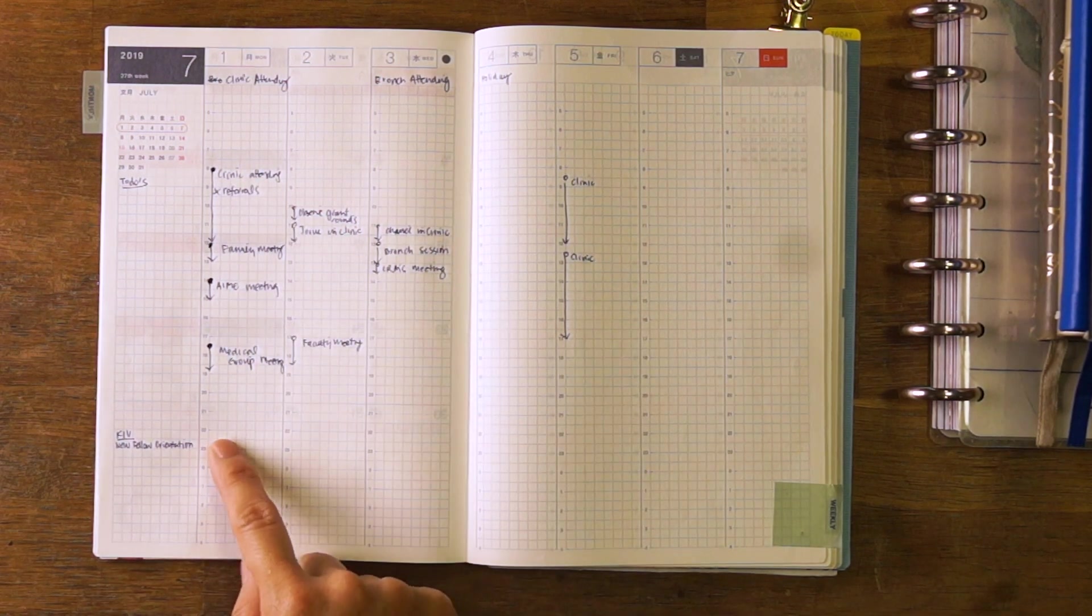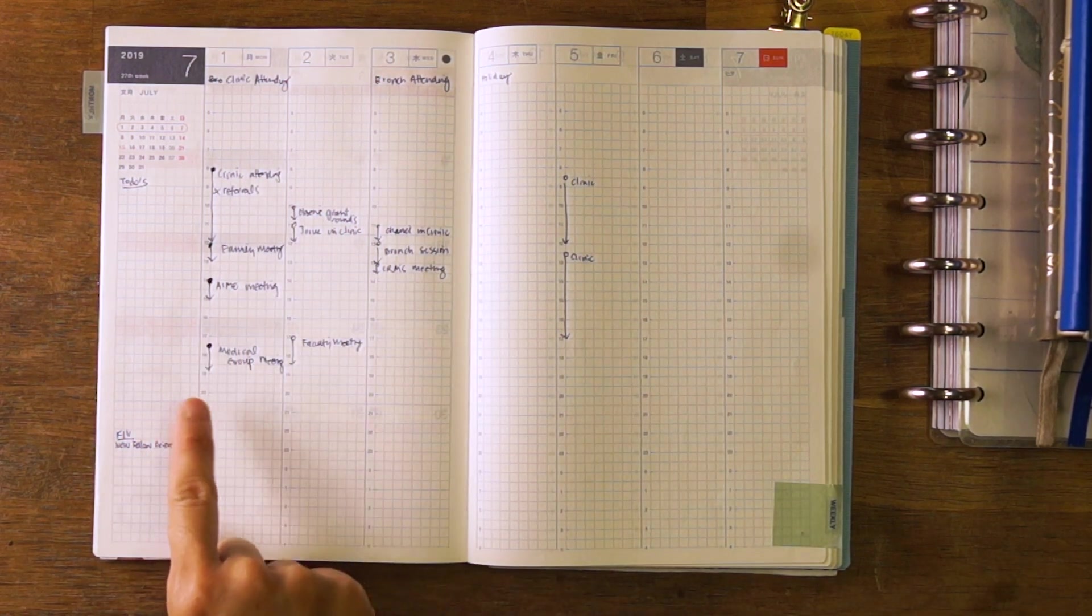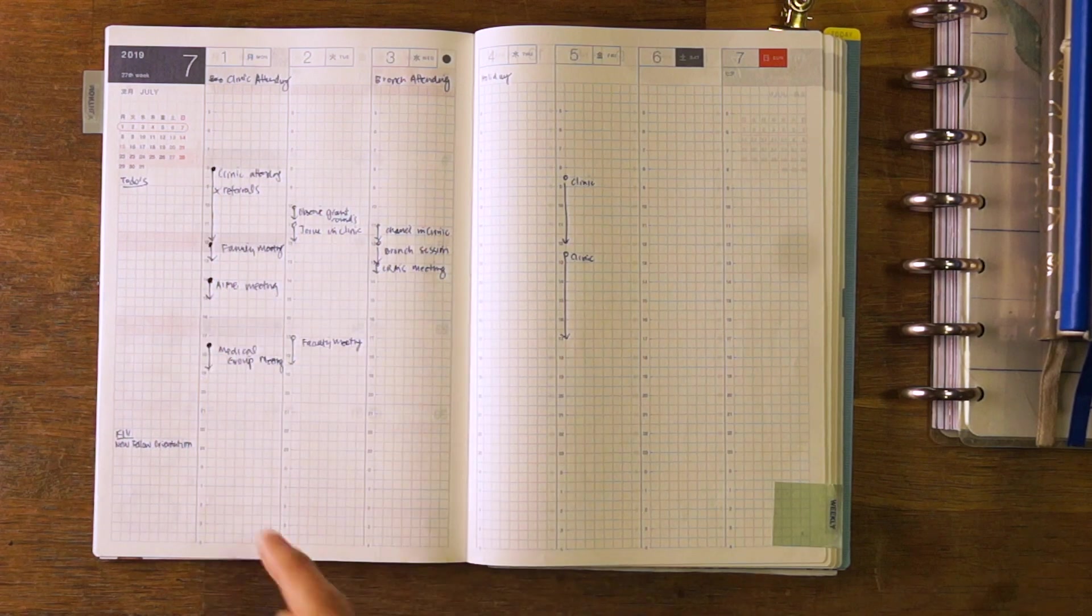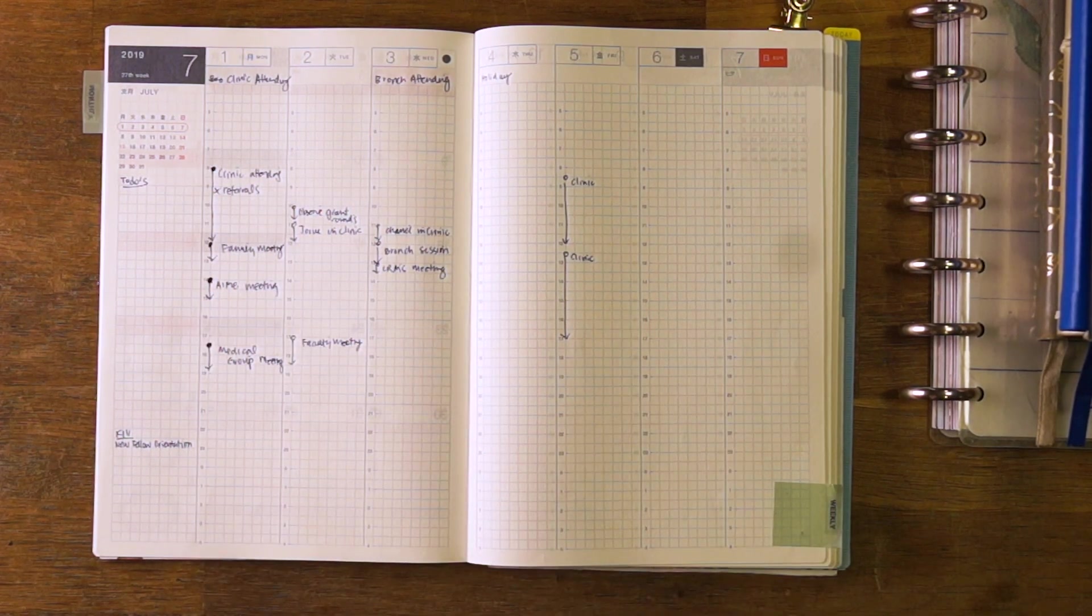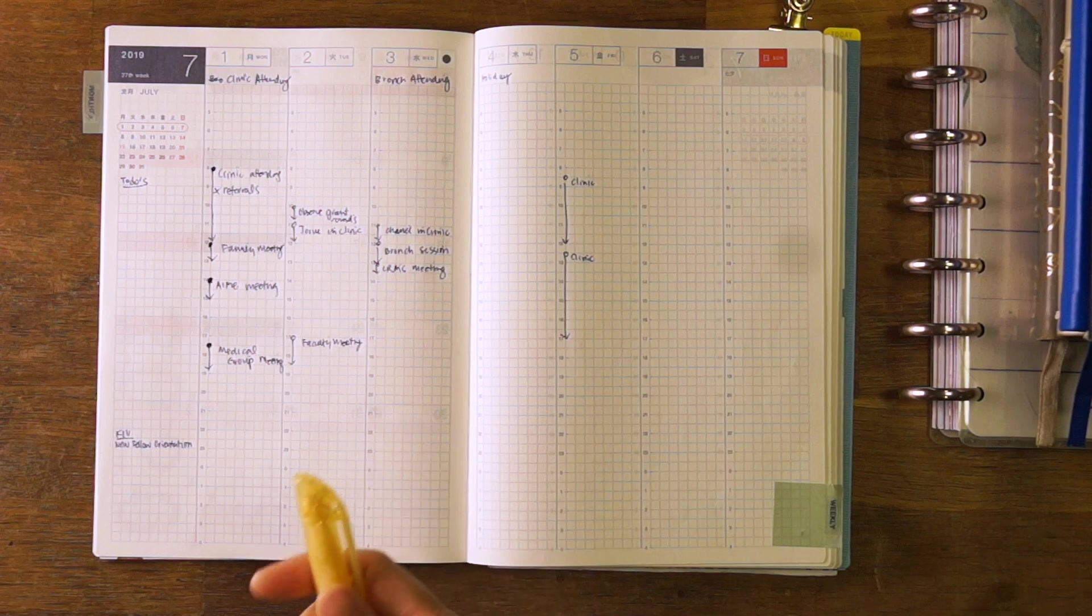I already did everything for Monday, meaning that I had filled in all the dots for the things that I've actually done. And I needed to still do my color coding, so I'm going to do my color coding now.